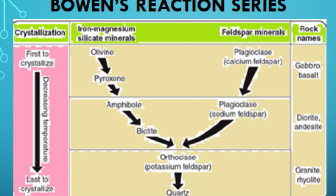Bowen's Reaction Series is a geological concept that explains how different types of igneous rocks form as magma cools and solidifies. It was developed by the Canadian geologist Norman L. Bowen in the early 20th century, and it remains a fundamental principle in the study of igneous petrology.